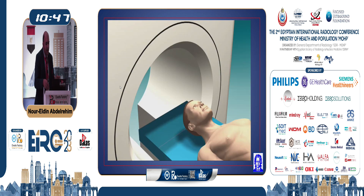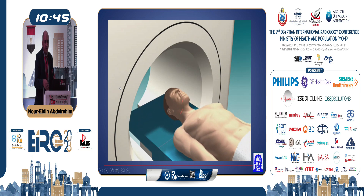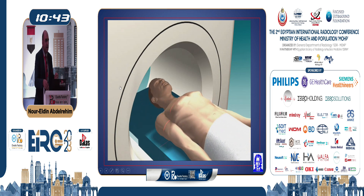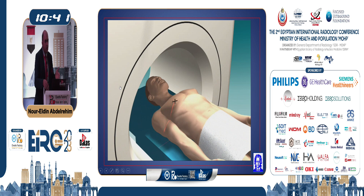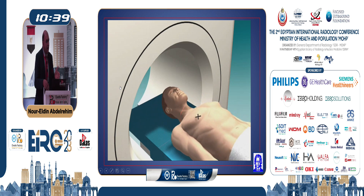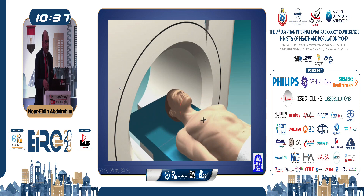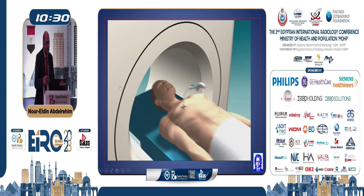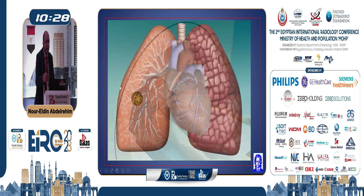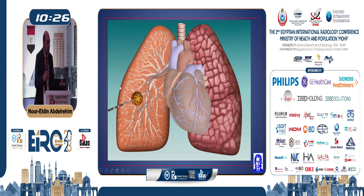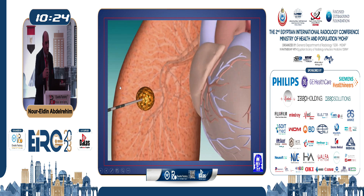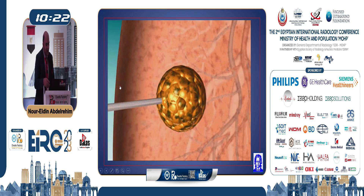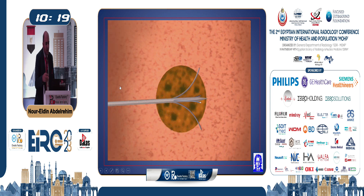The technique for ablation is done under CT guidance. Like CT-guided lung biopsy, we place a surface marker on the lesion to get the shortest and safest access. Afterwards, we insert the probe or antenna inside the lesion, give the amount of energy proportional to the size of the lesion, and then achieve a safety margin to ensure complete ablation.